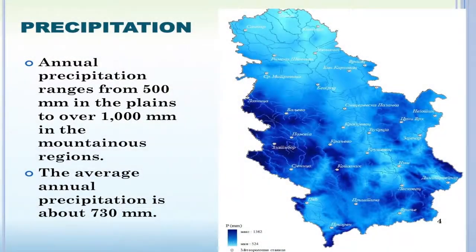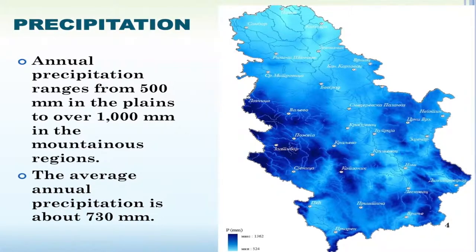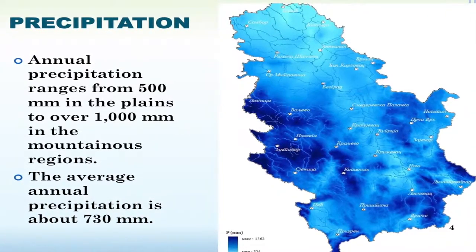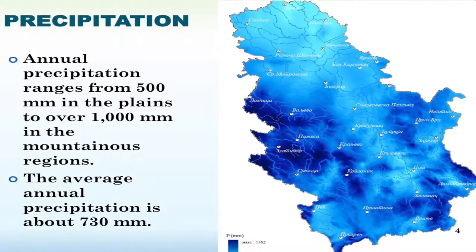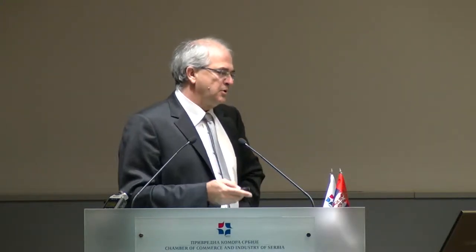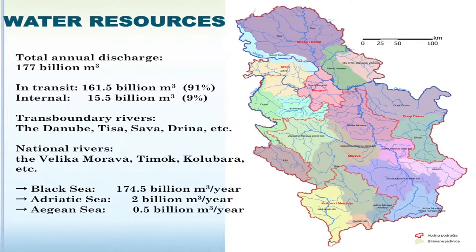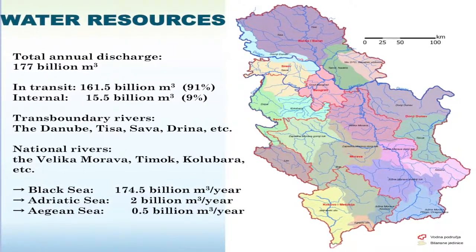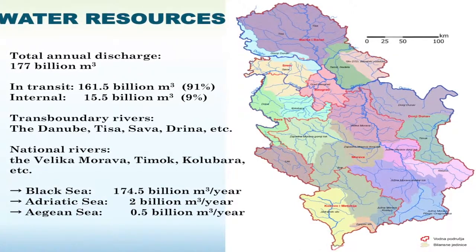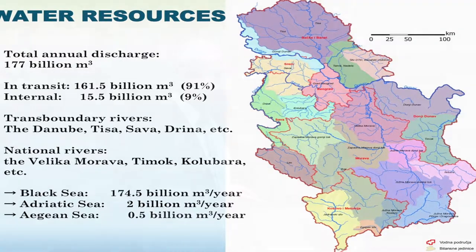Annual precipitation as a source of our water resources is somewhere in the middle globally — averaging about 730 millimeters — but differs from about 500 millimeters in the north to over 1,000 millimeters in mountainous regions, particularly in western and southwestern areas. This creates a total internal outflow from the territory of about 15.5 billion cubic meters. A major advantage is that from upstream countries we receive about 160 billion cubic meters via the Danube River Basin, creating good conditions for northern parts but also certain problems regarding flood protection and excess water removal.